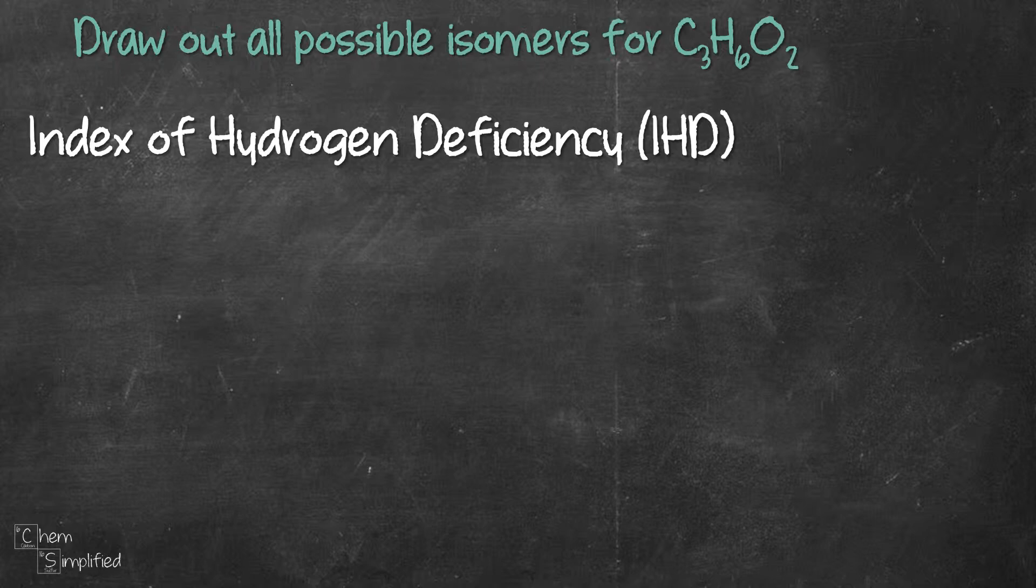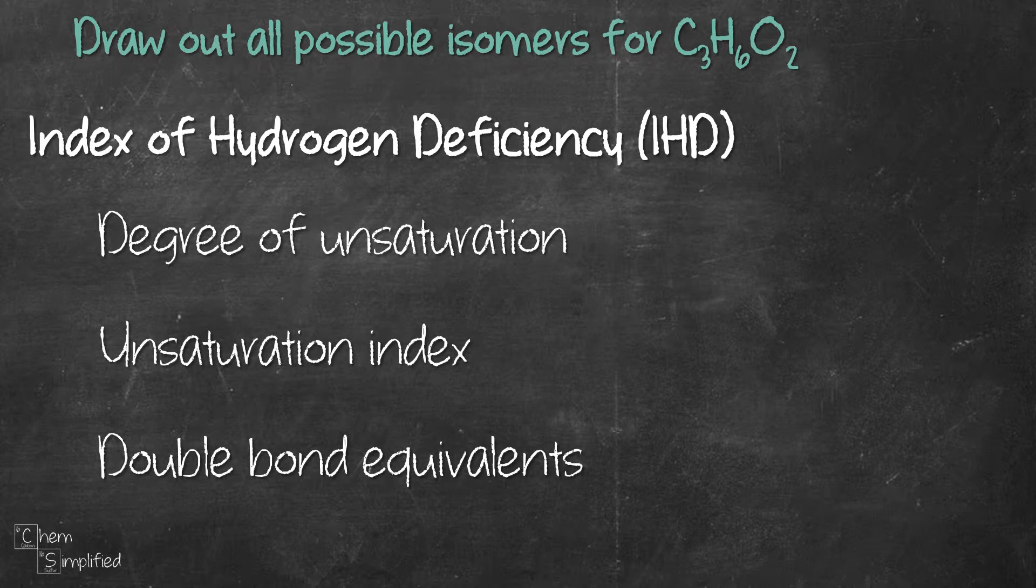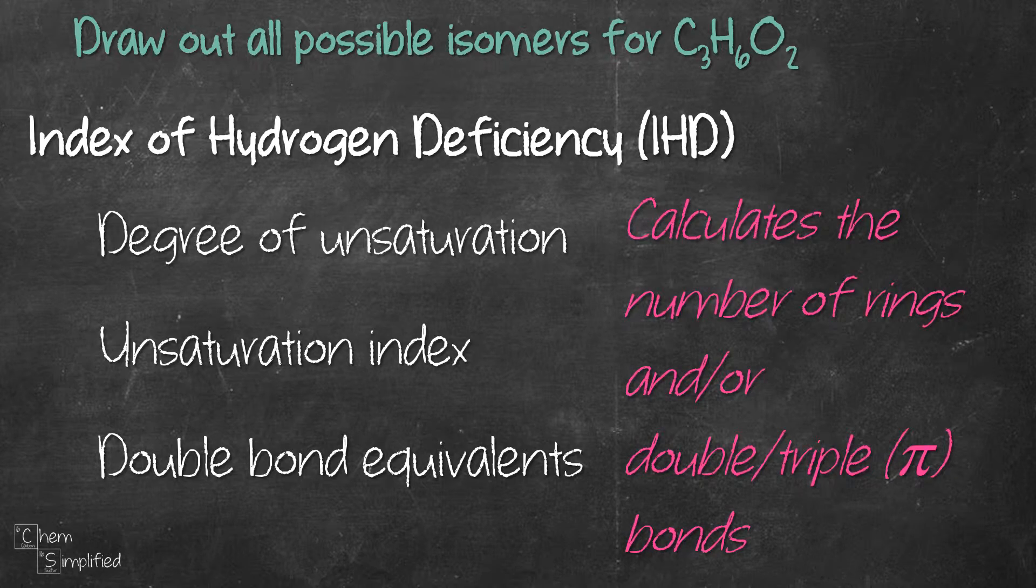IHD stands for Index of Hydrogen Deficiency. It also goes by these names. Basically what it does is it will tell us how many rings or double or triple bonds are present in the formula. So this number is going to be very useful because it will give us a target to work towards. Nothing is worse than hitting in the dark, so let's start by calculating the IHD.